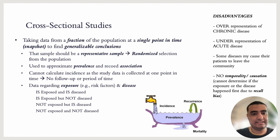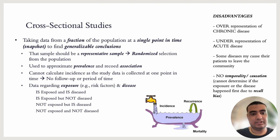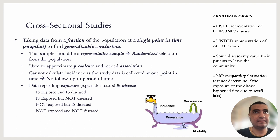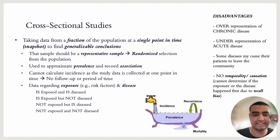These types of studies are used to measure prevalence of a disease and record associations. They cannot calculate incidence, because to calculate incidence you have to follow up with patients over a period of time — from point A to point B. In a cross-sectional study, you only have one point in time, so you cannot measure incidence.